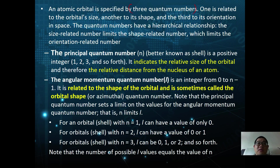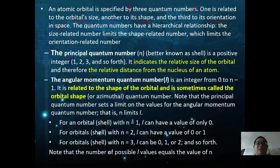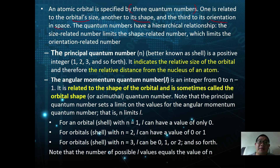An atomic orbital is specified by three quantum numbers: one is related to the orbital size, another to shape, and the third one is the orientation in space. The quantum numbers have a hierarchical relationship — the size-related number limits the shape-related number, which in turn limits the orientation-related numbers.